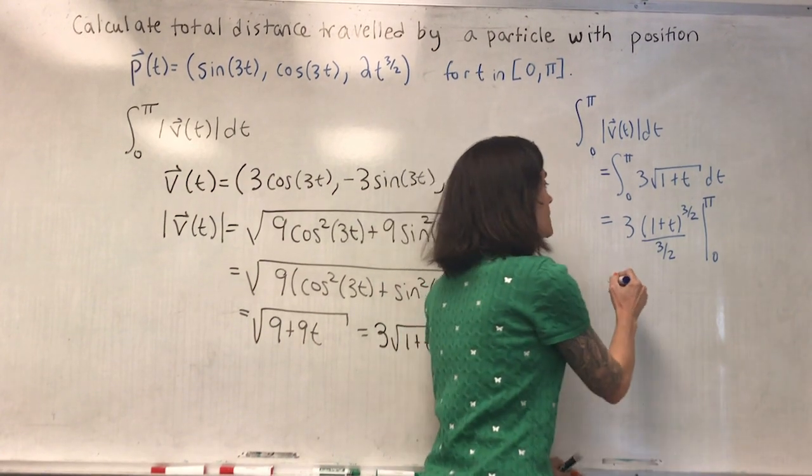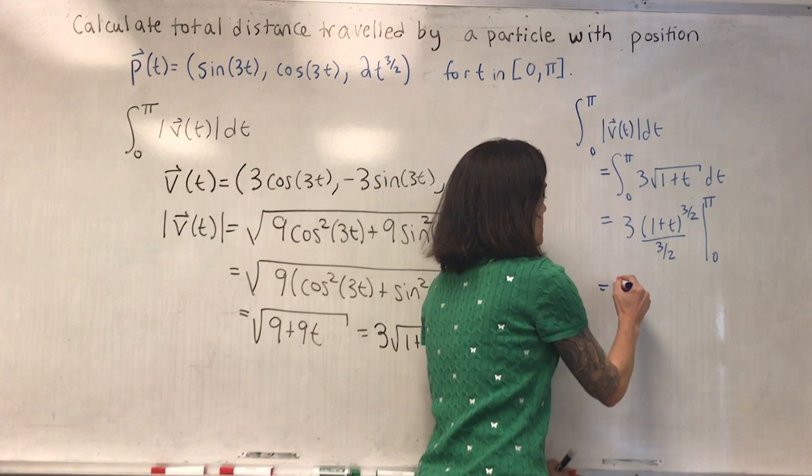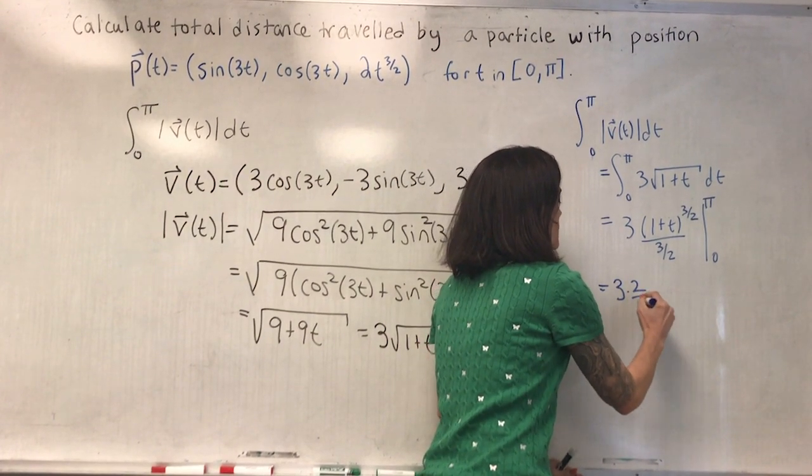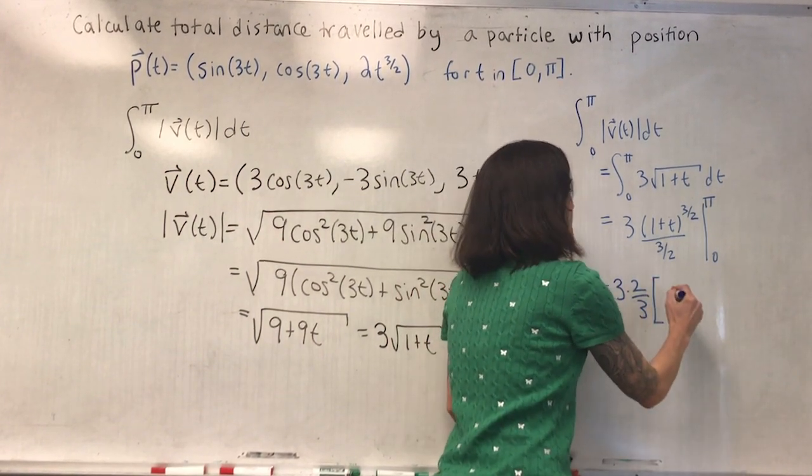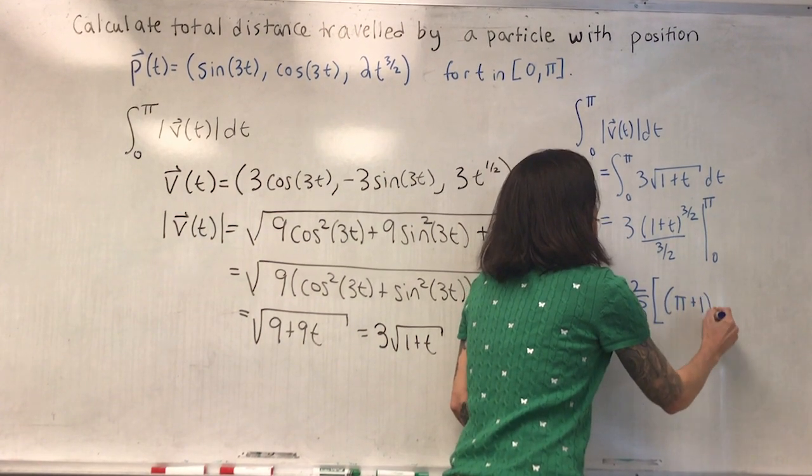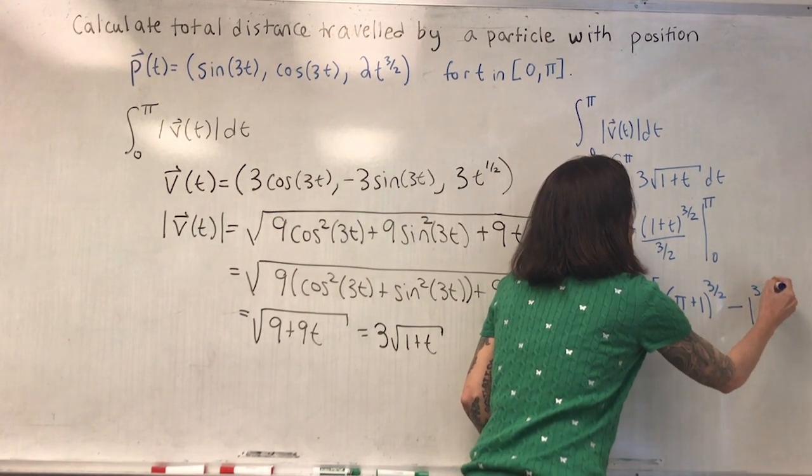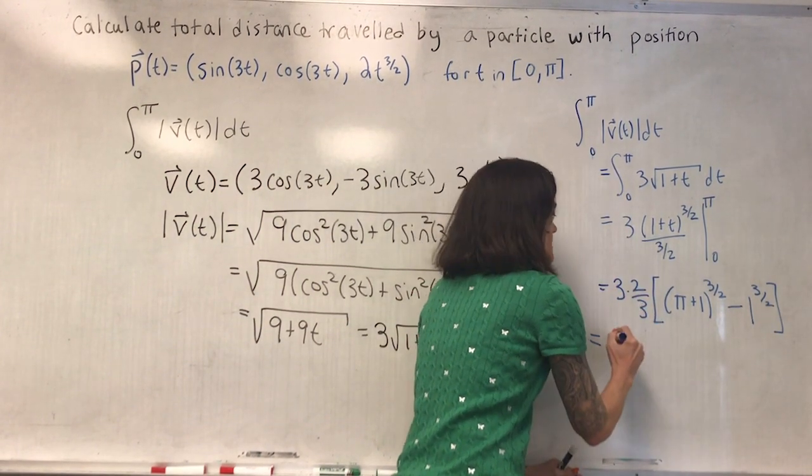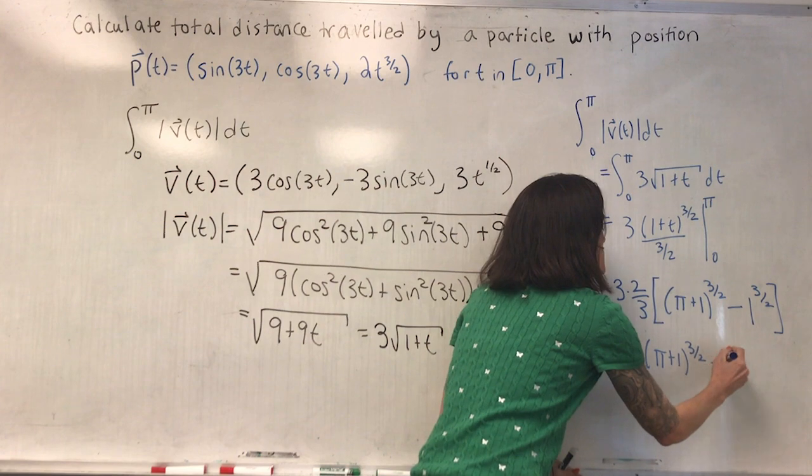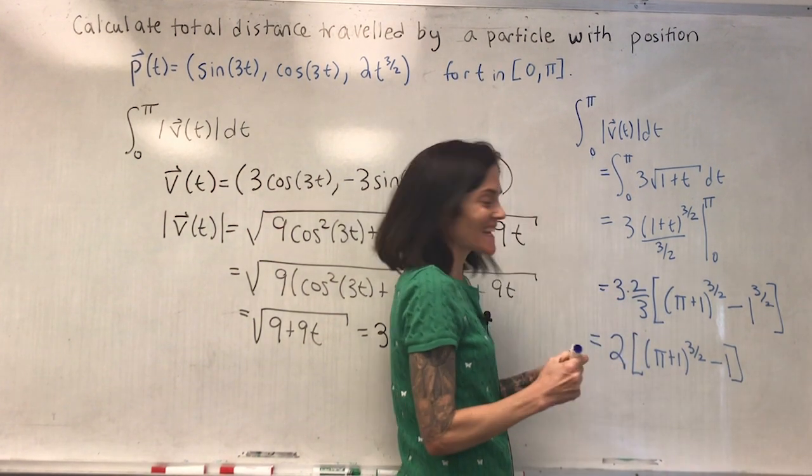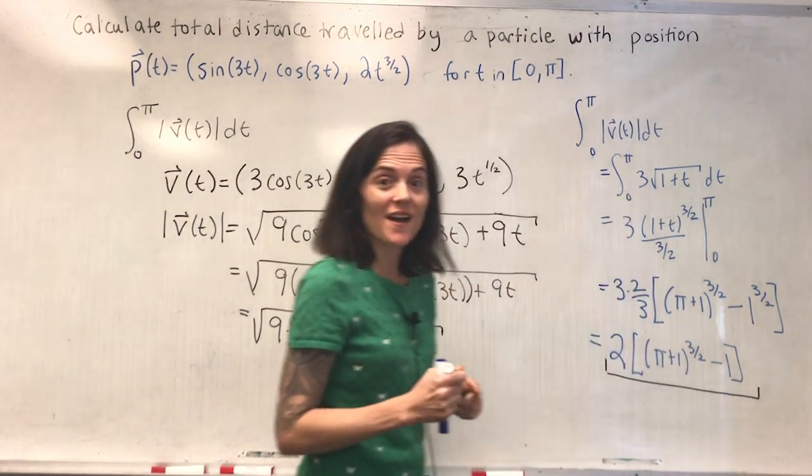This is a one half power. So I add a power, divide by the higher power, evaluated between zero and pi. This will simplify to just two. And then I have pi plus one to the three halves minus one to the three halves. And my final answer, the threes cancel, I get two pi plus one to the three halves minus one. This is the length of the curve or total distance traveled on this interval.